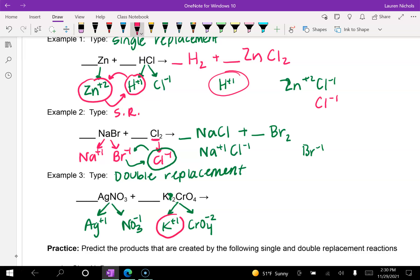And in a double replacement, your positives or your wives always swap places. And so here we have K plus one times NO3 negative one. Then we have Ag plus one and CrO4 negative two.